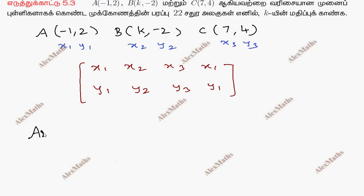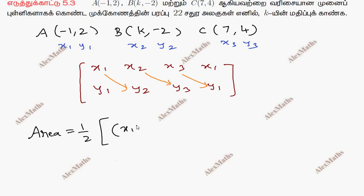Area equals one-half, bracket open. This gives us the leading diagonal products: x1·y2 plus x2·y3 plus x3·y1.